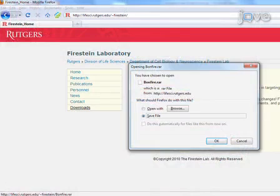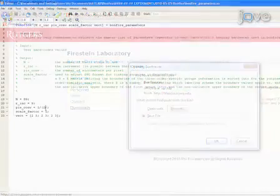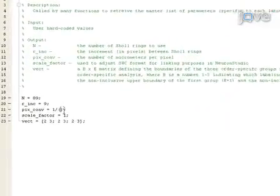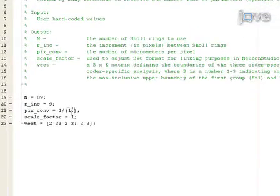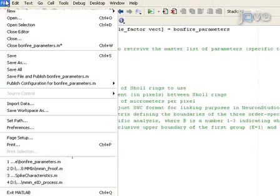After downloading the Bonfire program, the program settings must be adjusted based on the image resolution of your images. In the Bonfire parameters, replace the current value for the variable PIX_conversion with the image resolution value.